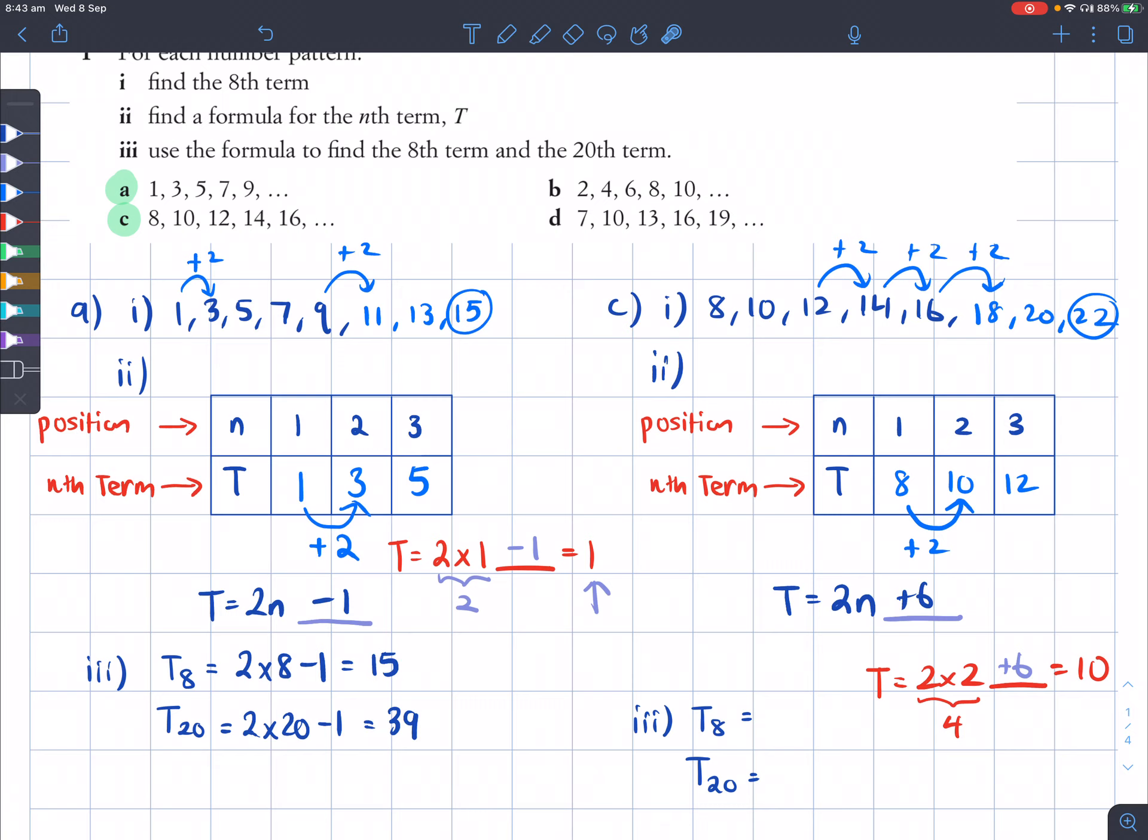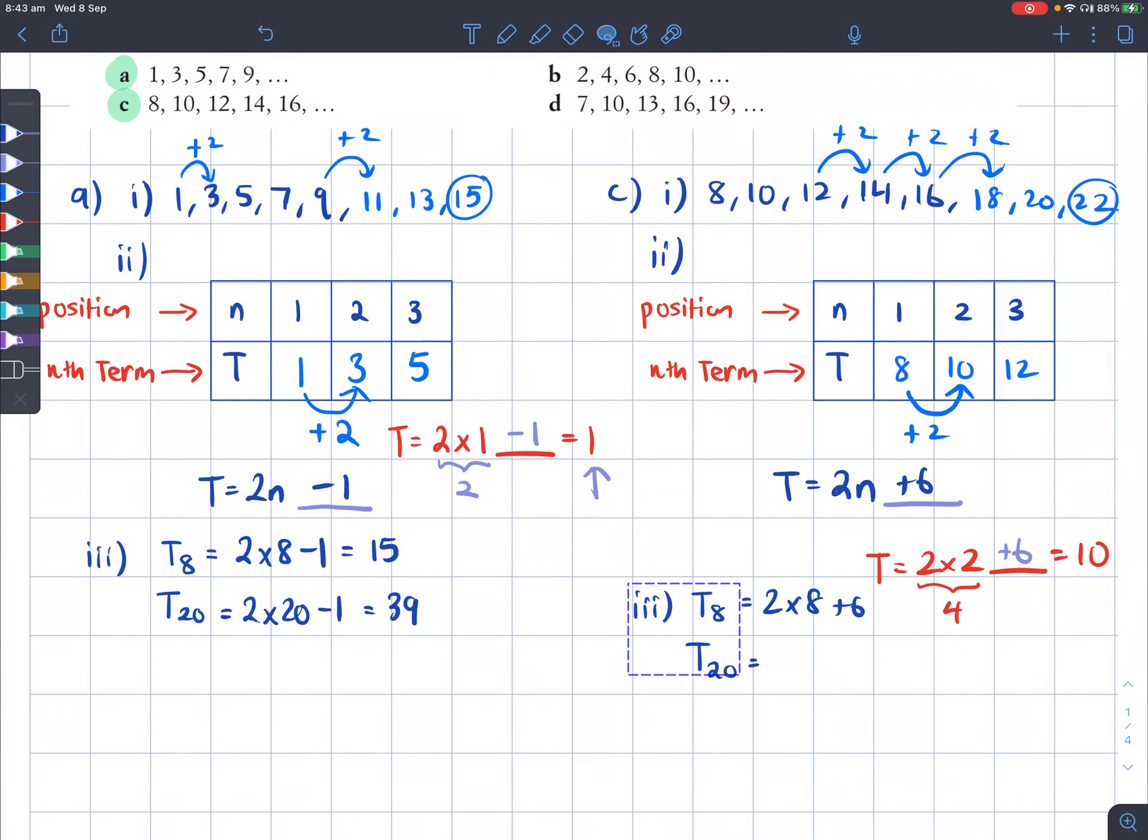Now that I have the formula, I can find out what the 8th term is. So I can substitute in n here as number 8. And that will be 2 times 8 plus 6, which is going to give us 16 plus 6 and that's 22. Whereas T₂₀, the 20th term, we get by doing 2 times n, substitute it in with 20. So 2 times 20 plus 6 will give me 46. That 46 is our 20th term.